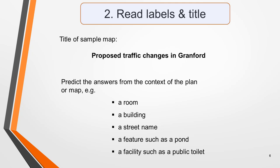If there is no word list, try and predict what type of words the answers will be from the context. For example, is it a room, a building, a street name, a feature such as a pond, or a facility such as a public toilet? Generally, the speaker will begin their talk by introducing themselves and the subject or purpose of their talk, so this will also help you to understand the context.